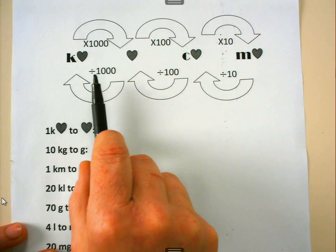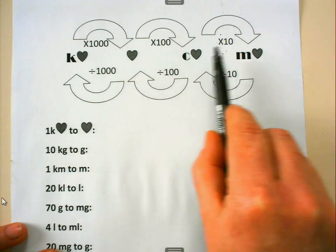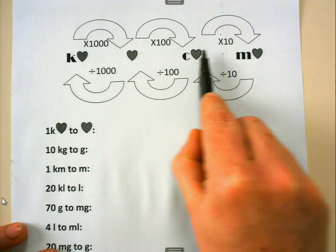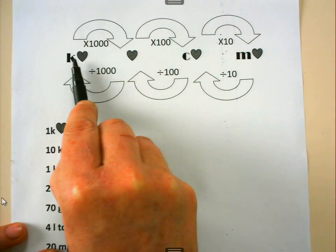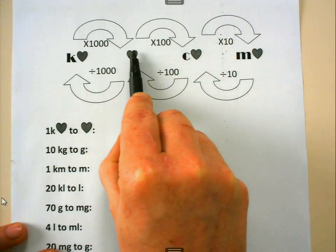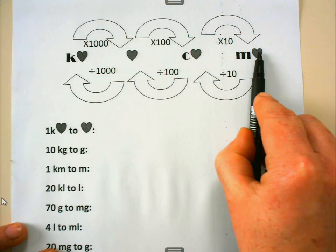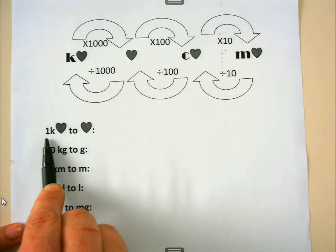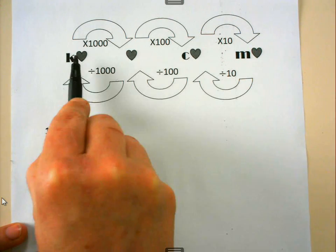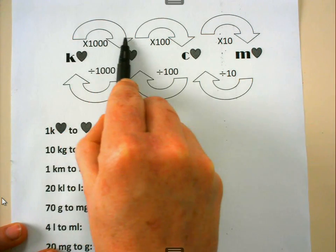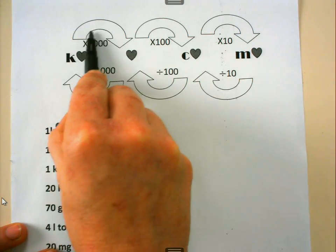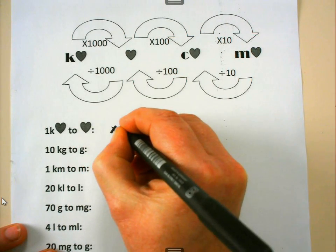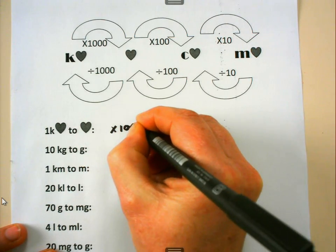Let us practice. I have my kilo heart, my heart, my centi heart, and my milli heart. If I move from the kilo heart to the heart, I move in the direction toward smaller units, so I must multiply by 1000.